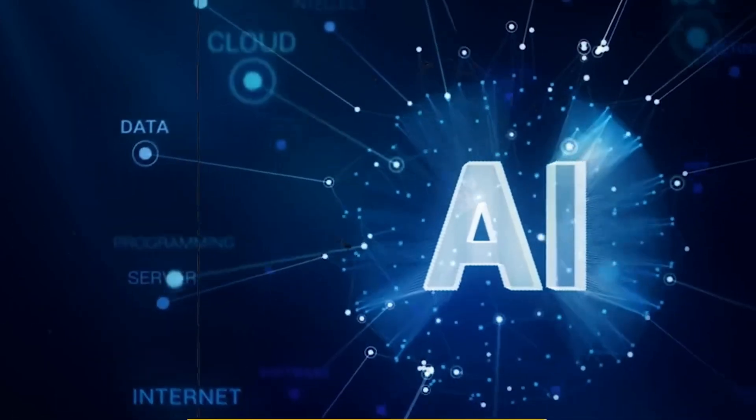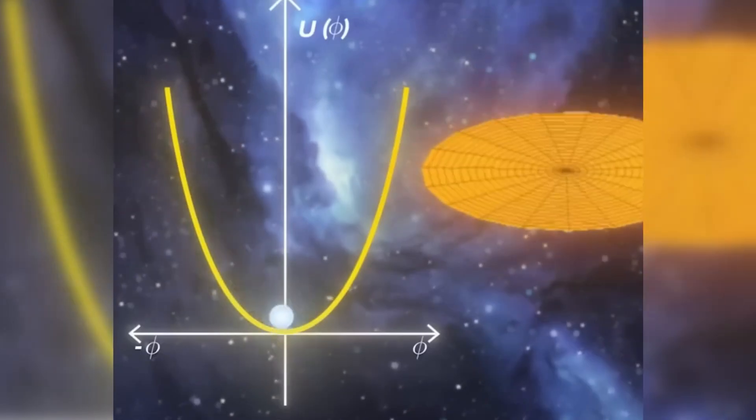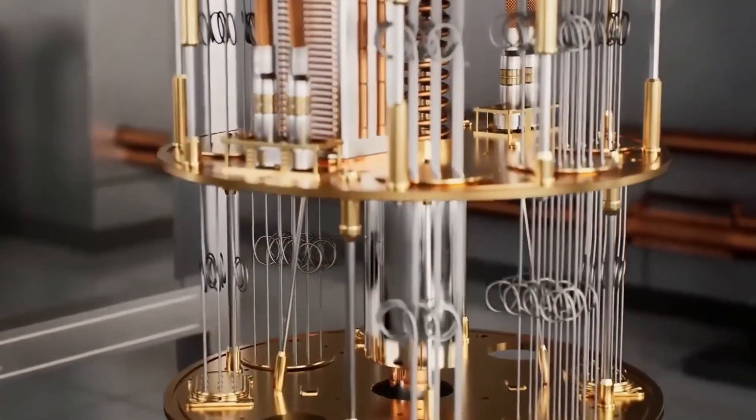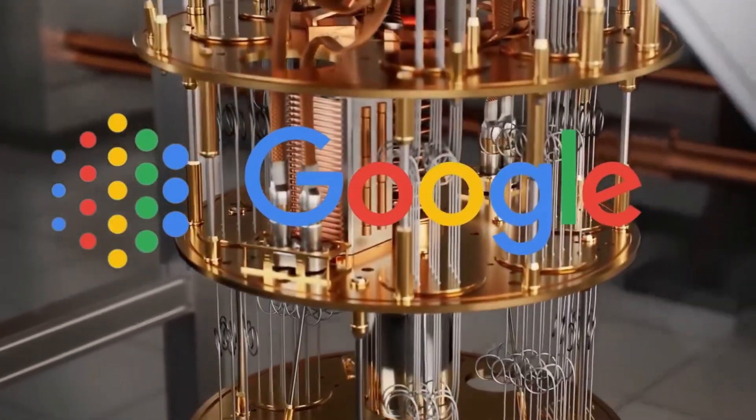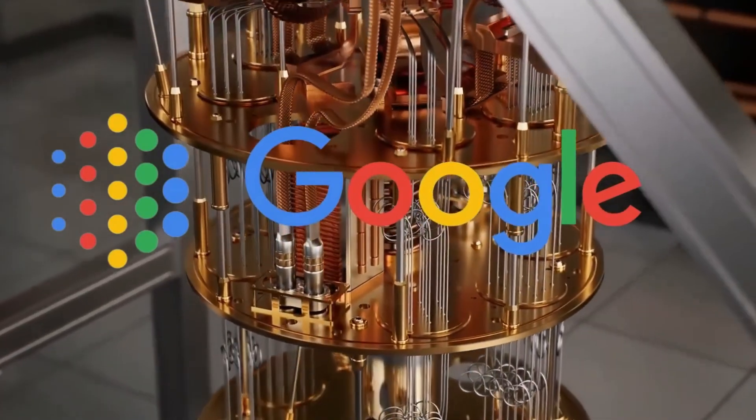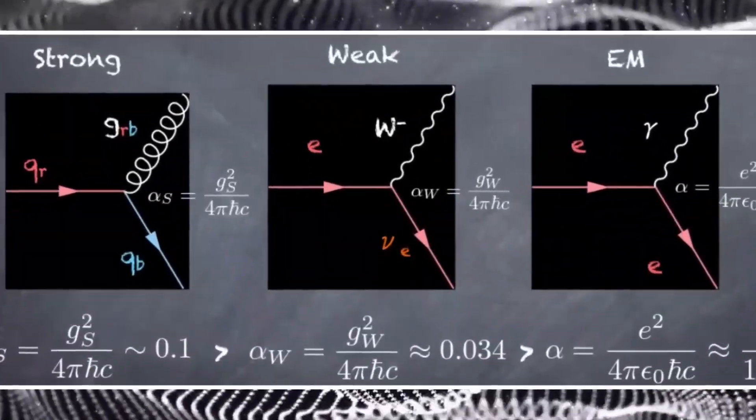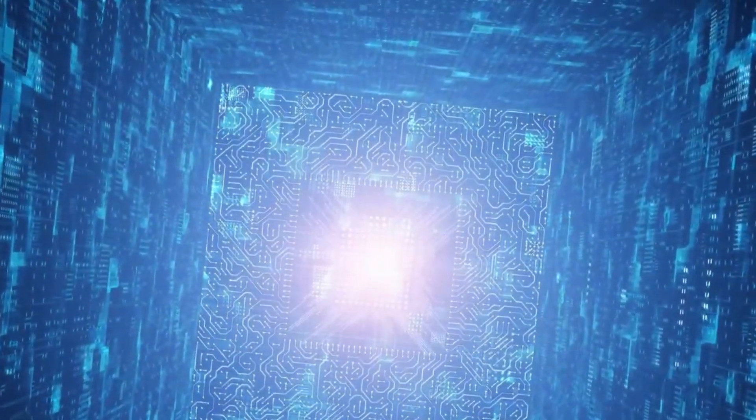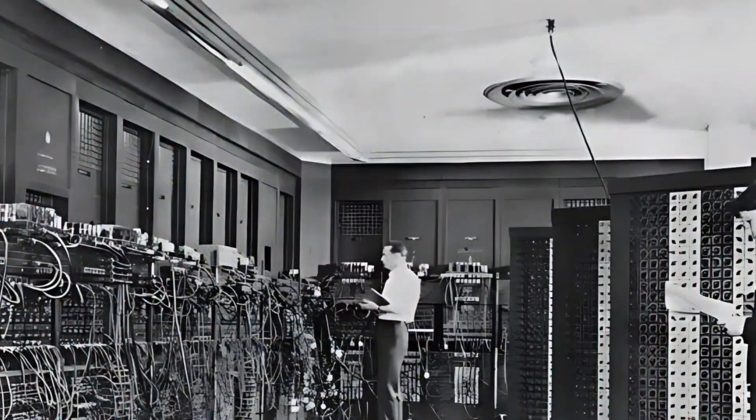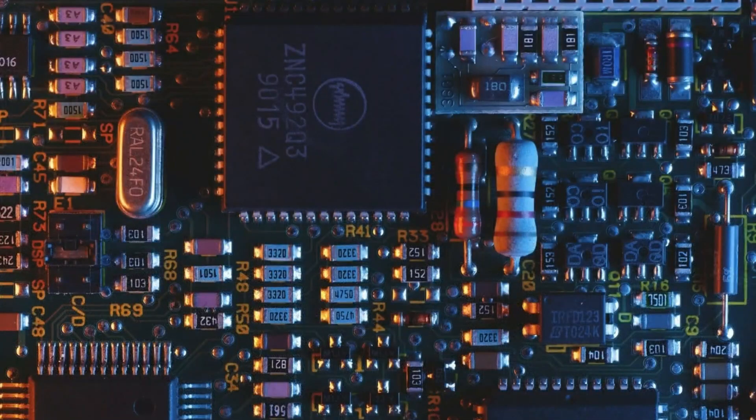This is not just a weird laboratory trick. It changes everything about how we think matter can behave. In electronics, it means wires with almost no resistance, computers that barely waste any energy, and circuits that can move electrons at blistering speeds. But beyond technology, it means that the fundamental property of mass can now be tweaked, shifted, and maybe even tuned like a radio dial.